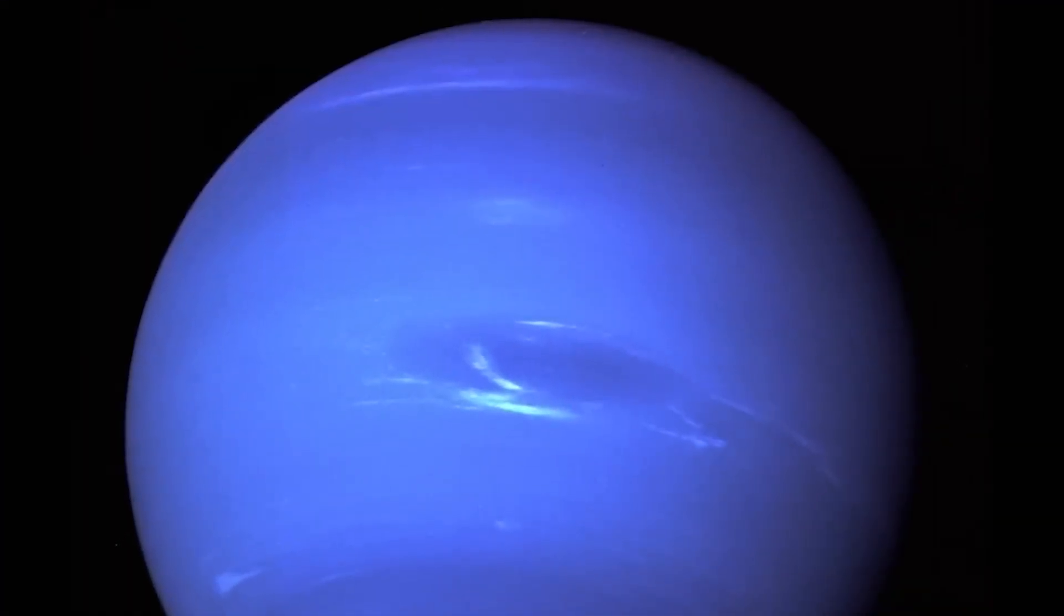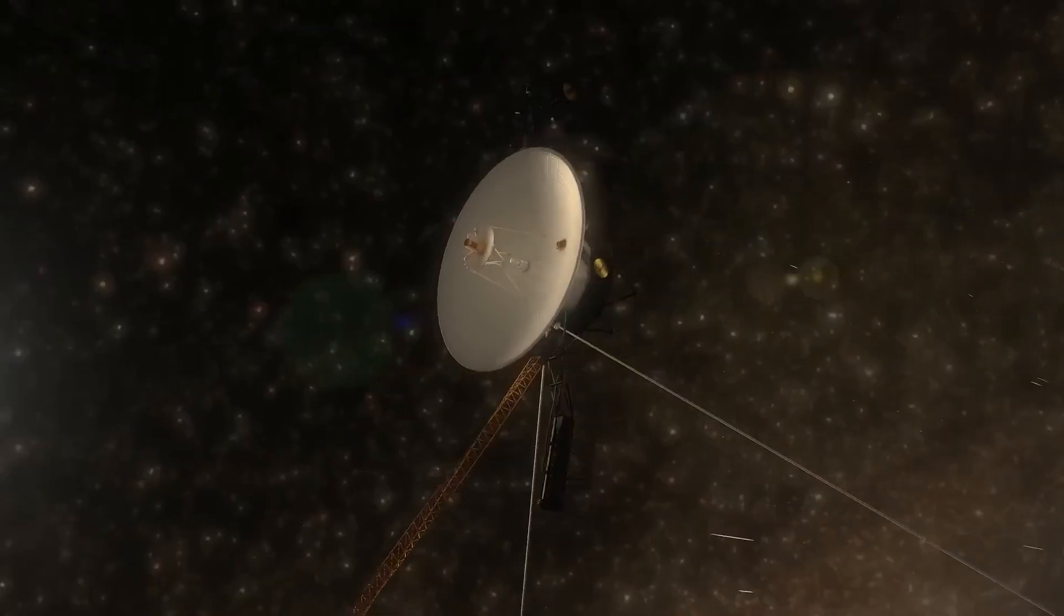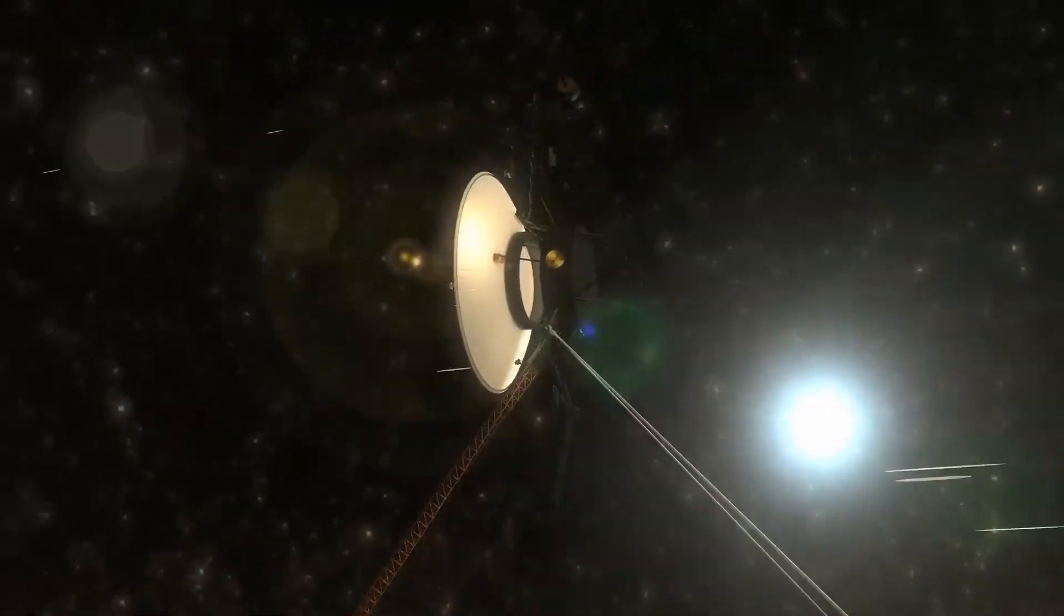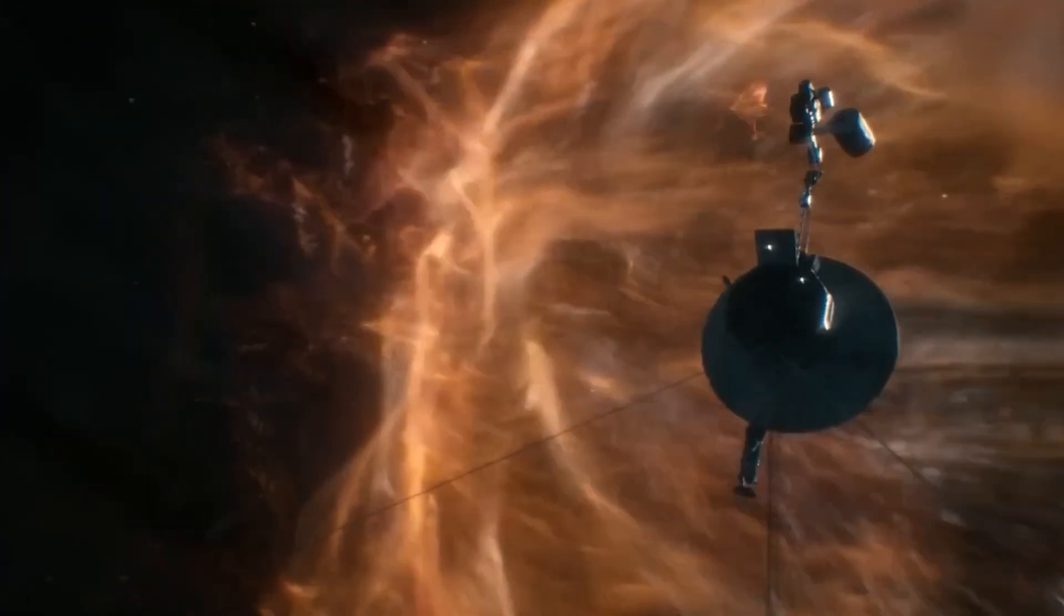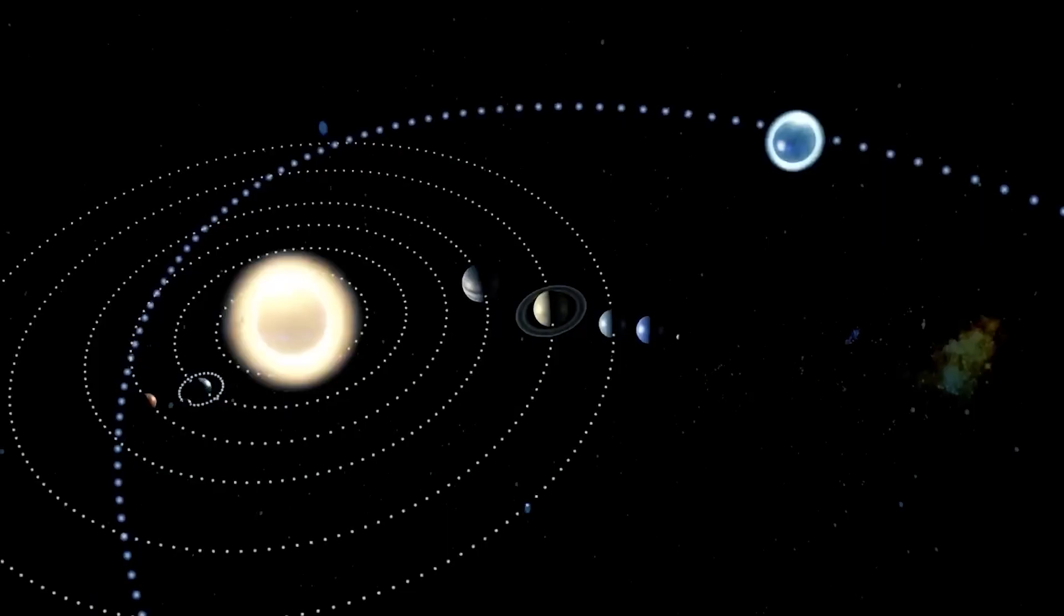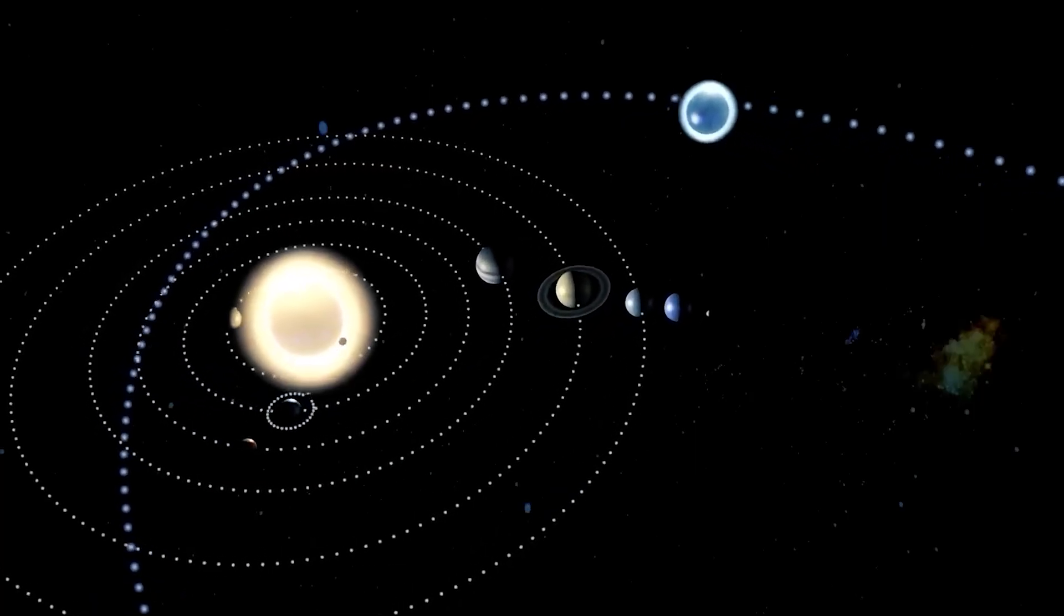Three years later, Voyager 2 reached Neptune, capturing unprecedented details of this remote planet. During the Neptune encounter, the spacecraft recorded astounding wind speeds reaching up to 1,000 miles per hour, marking a milestone as the fastest winds ever documented on a planet within our solar system.